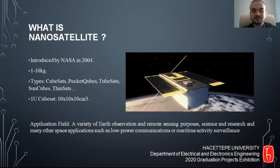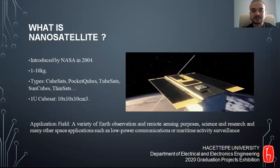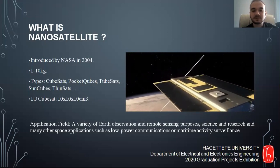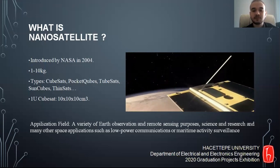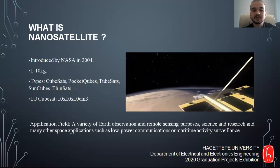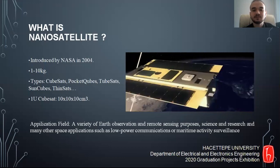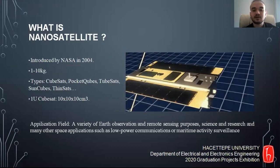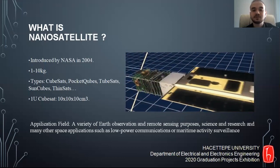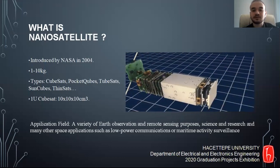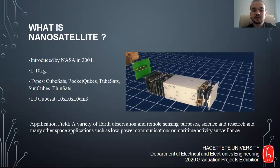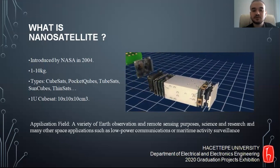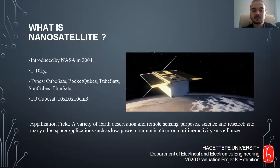Let's begin with the term of nano-satellite. Nano-satellite is usually applied to the name of an artificial satellite with a wet mass between one and ten kilograms. Nano-sats cover types of all satellites above. We designed our nano-satellite based on the CubeSat standards.